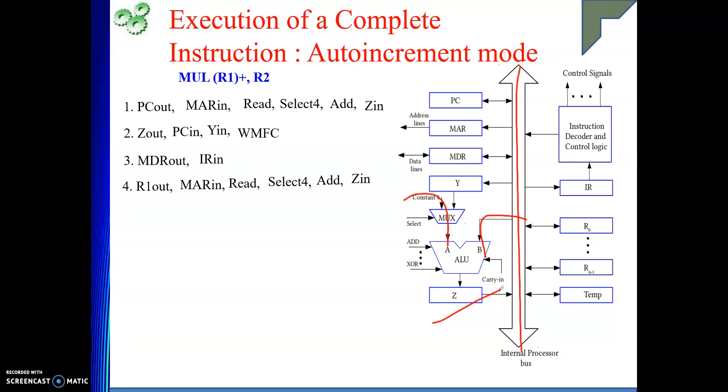MAR is already holding the original content of R1. Now, R1 content we have incremented. Next is Z out. From Z register, where the operand will go? Whether it will go to MAR? No. Not at all. MAR is already having the address from where the read operation need to be done. Then from Z register, the content will go to where? It will go to R1. Because R1 will be modified ultimately. R1 in. This much only will perform. And then we will give the WMFC.